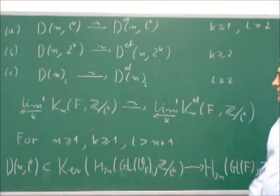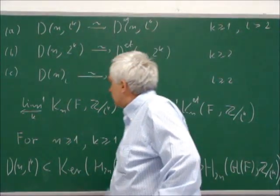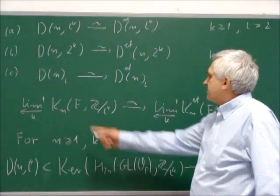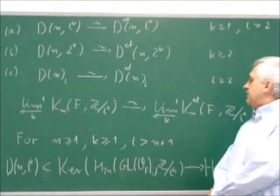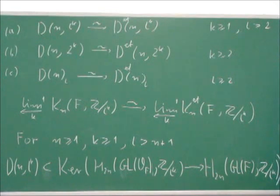Next theorem is just a lim¹ version of Quillen-Lichtenbaum conjecture, which says that lim¹ on K-theory with finite coefficients is the same as lim¹ of étale K-theory with finite coefficients.